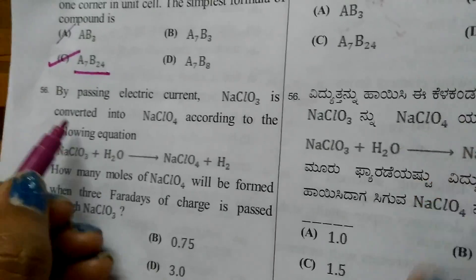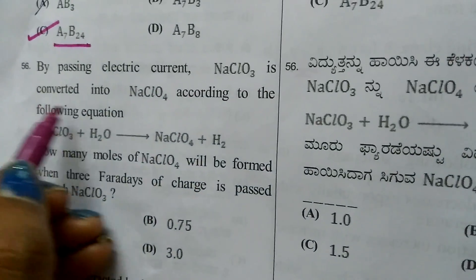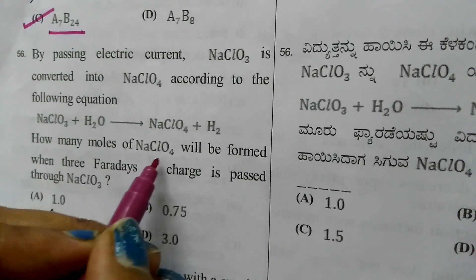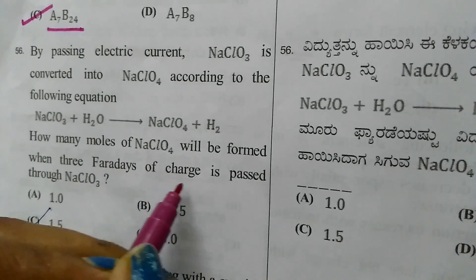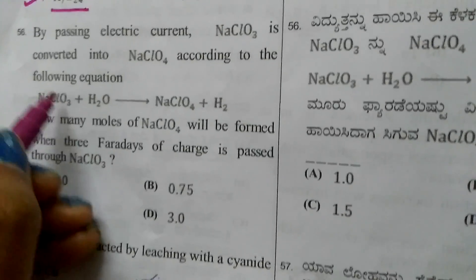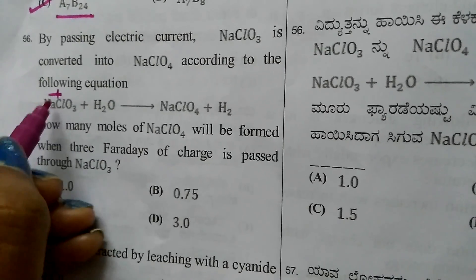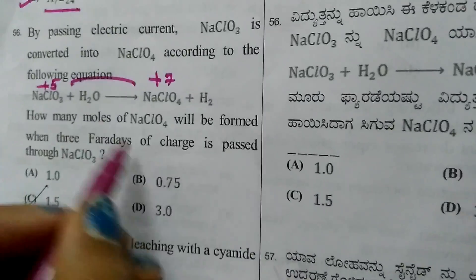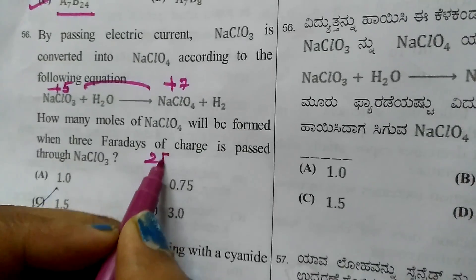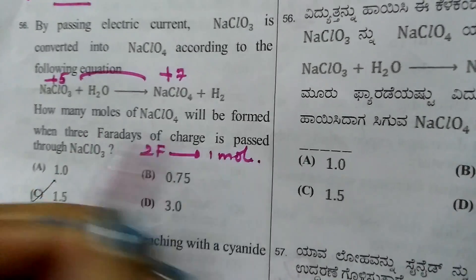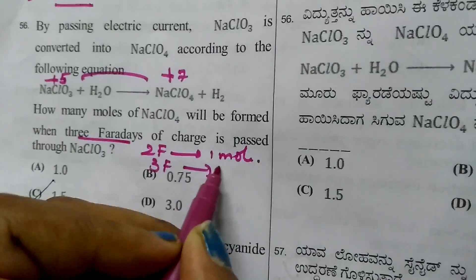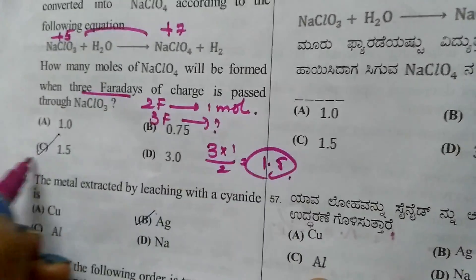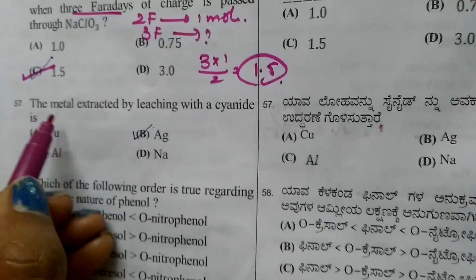Question 55-56: Passing electric current converts NaClO3 to NaClO4. How many moles of NaClO4 form when 3 Faradays pass? Oxidation state of chlorine changes from +5 to +7, a change of 2. Two Faradays give 1 mole, so 3 Faradays give 3×1/2 = 1.5 moles.